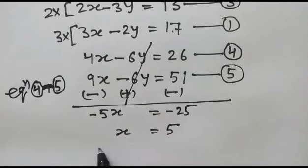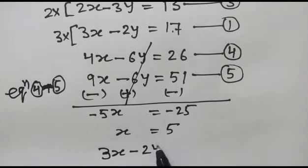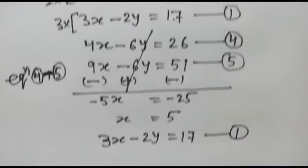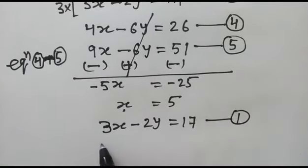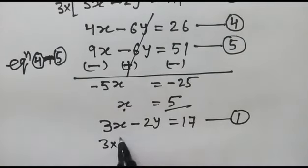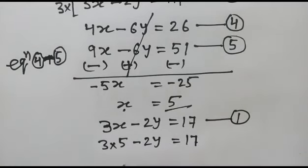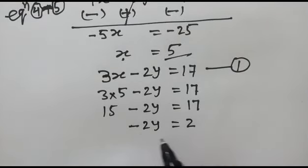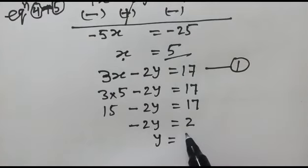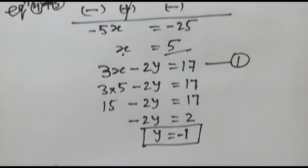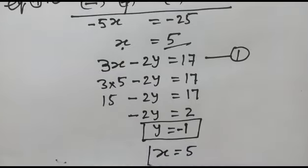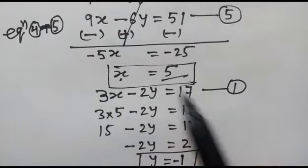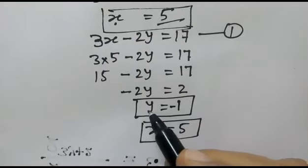Now we take equation one again: 3x minus 2y equals 17. Substituting x equals 5: 3 times 5 minus 2y equals 17, so 15 minus 2y equals 17, giving minus 2y equals 2, and therefore y equals minus 1. So our solutions are x equals 5 and y equals minus 1.